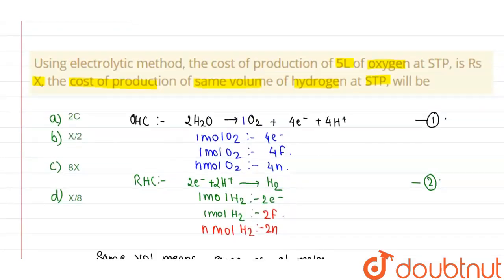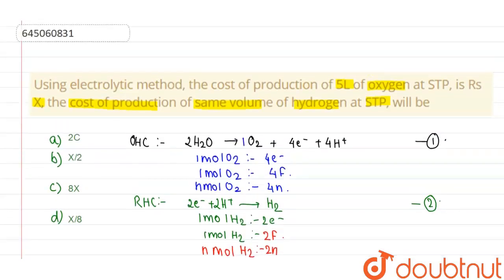So let's check the options. So the option B is correct here and which is X by 2. Thank you.